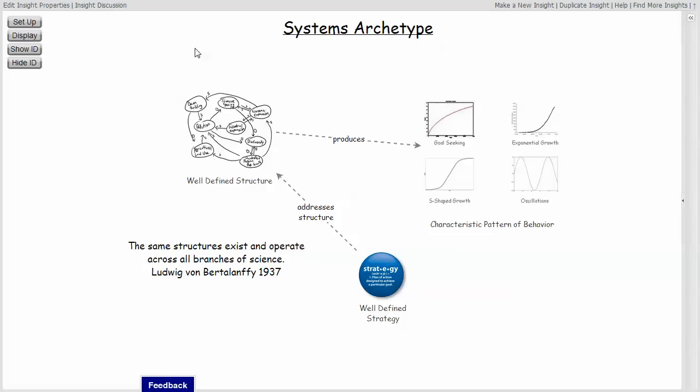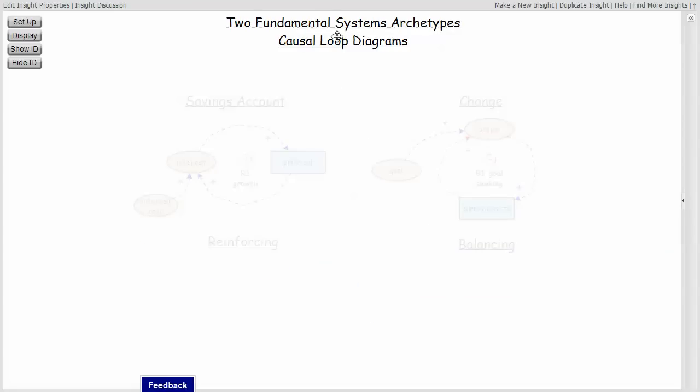They may have been, though that was the first reference that I came across that talked about various systems archetypes. As it turns out, there are two basic structures.